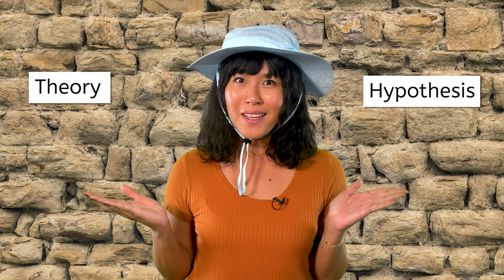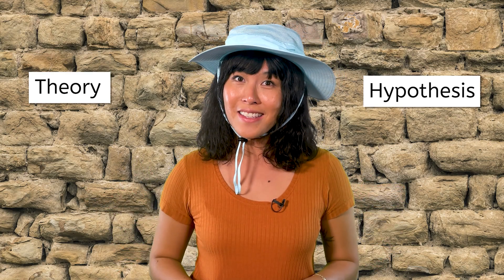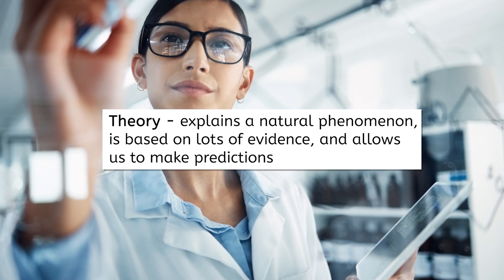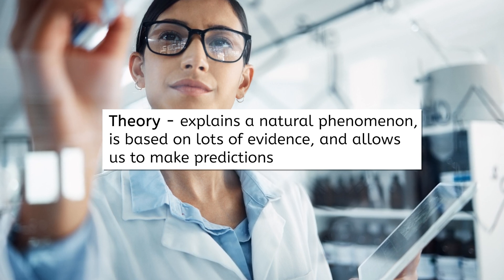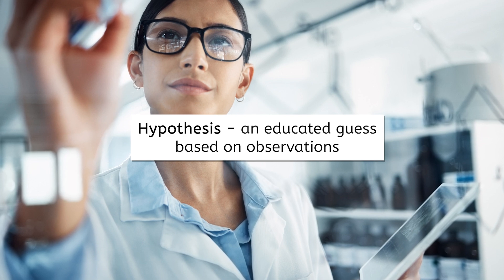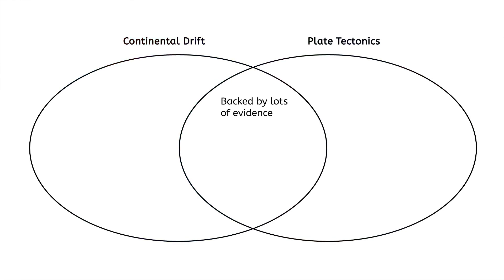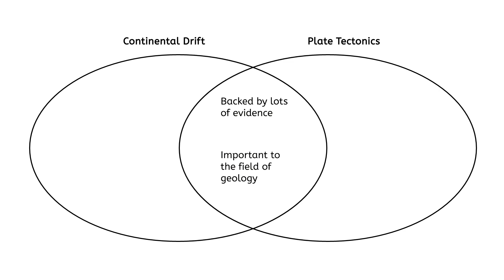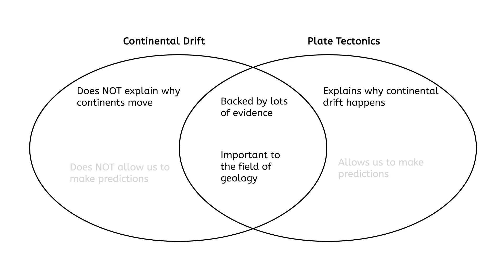While you might often hear the terms theory and hypothesis used interchangeably, remember they mean something very different in science. A scientific theory explains a natural phenomenon, is based on lots of evidence, and allows us to make predictions. A hypothesis is an educated guess based on observations. Both continental drift and plate tectonics are backed by lots of evidence and are important to the field of geology. However, unlike the theory of plate tectonics, continental drift does not explain how continents move or allow us to make predictions for the future. Therefore, continental drift by itself cannot be considered a true scientific theory. Instead, it's become an important part of the theory of plate tectonics, which geologists now use to predict how continents will move in the future.